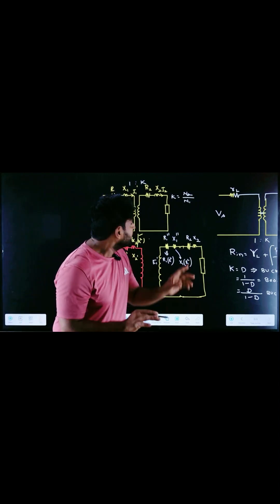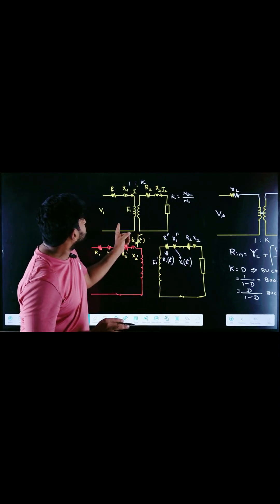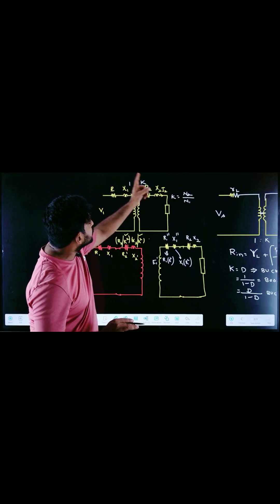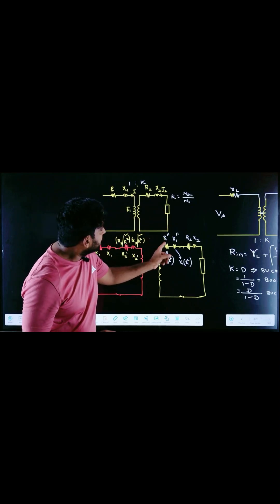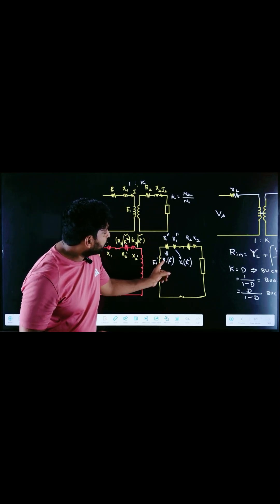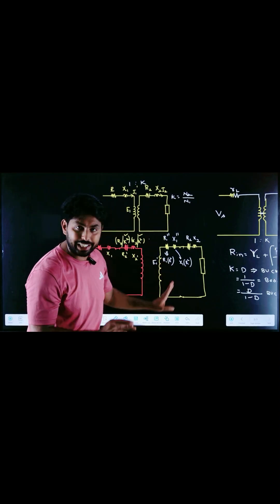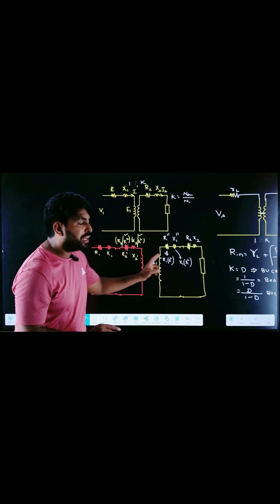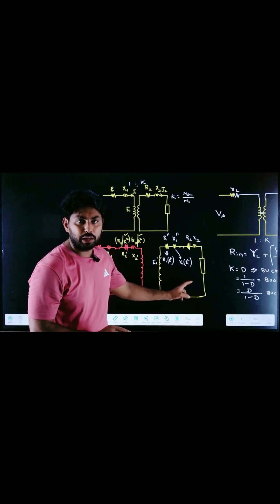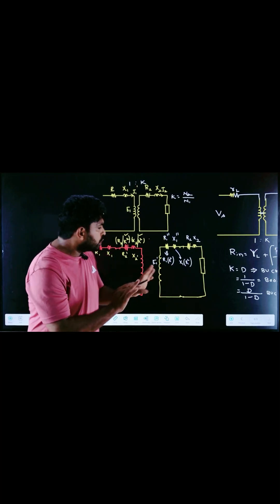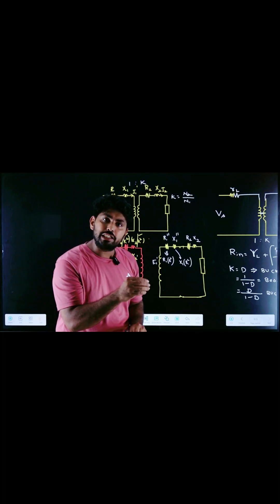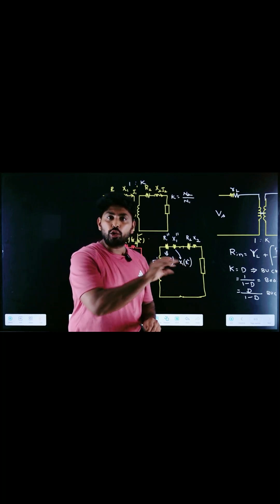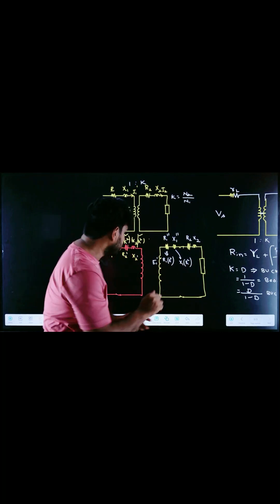In a similar manner, the primary terms have to be transferred to the secondary. For that, we need to multiply by k². So here: divided by k² to go to primary, multiply by k² to go to secondary. With this simple analysis, we can apply the same concept to the DC-to-DC converter as well.